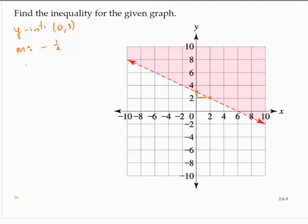So then I know that the equation would be y equals negative 1 half x plus 3. But it's an inequality, and since it's a dotted line, I know it's either y is greater than or y is less than negative 1 half x plus 3.